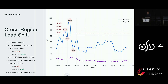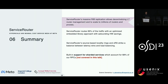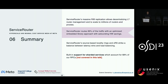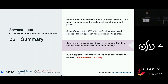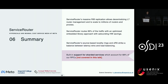To conclude: Service Router's massive RIB replication allows scaling to millions of L7 routers; the embedded library approach results in great hardware savings compared to a proxy approach; source-based locality rings help reduce latency; and global computation with XRS ensures graceful and automated cross-region failover. There are also various aspects I wasn't able to cover due to limited time — please take a look at the paper for those details. I look forward to your questions at the Q&A session.